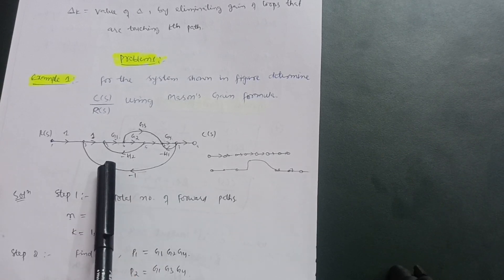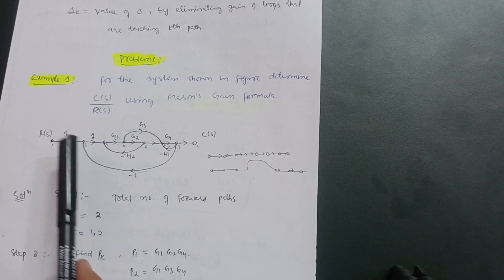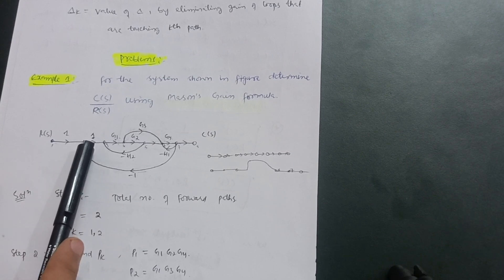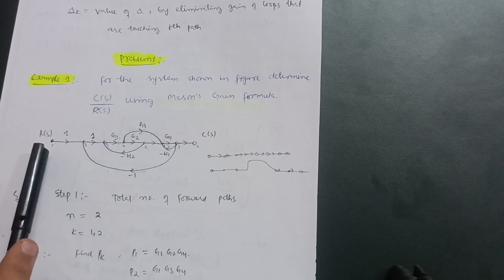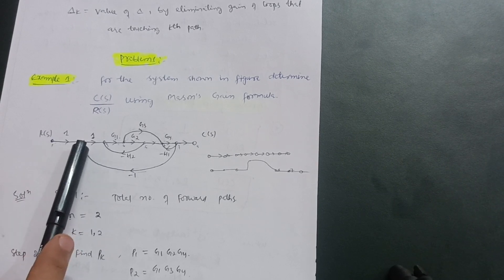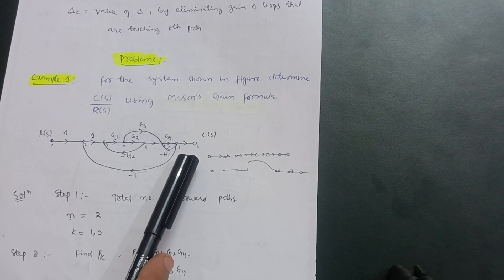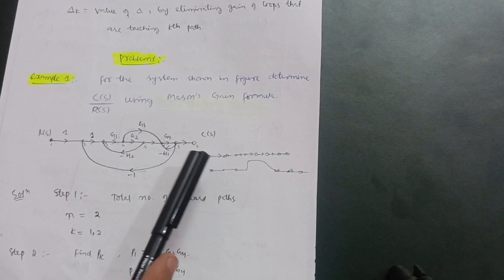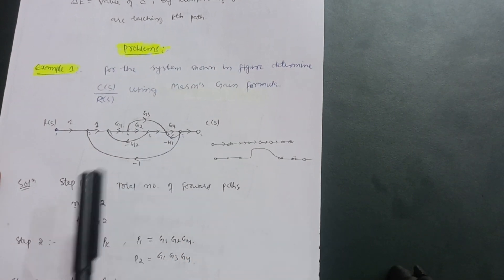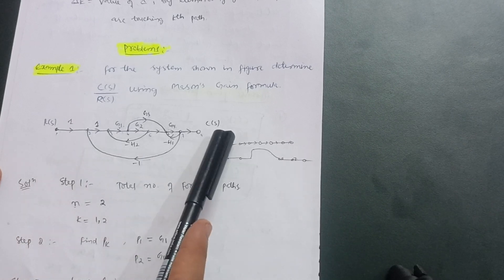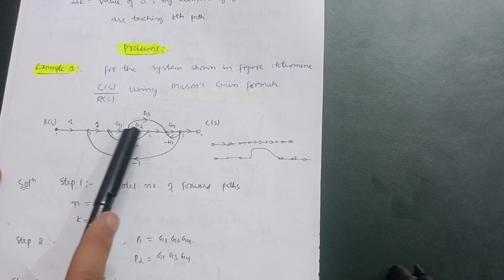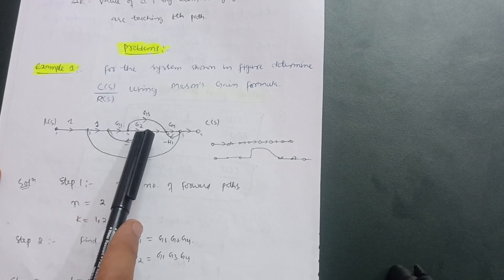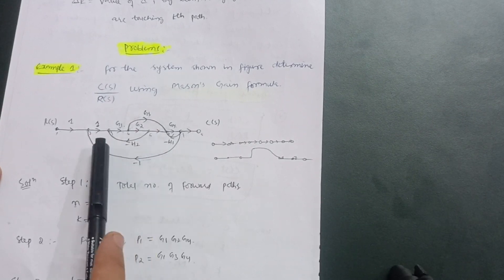In block diagrams we had summing points and takeoff points. In the signal flow graph, those are represented by nodes — denoted by a dot or a small circle. In this diagram you can see nodes 1 through 8. Here, R(s) is the input, C(s) is the output, and G1, G2, and other values are the path gains.